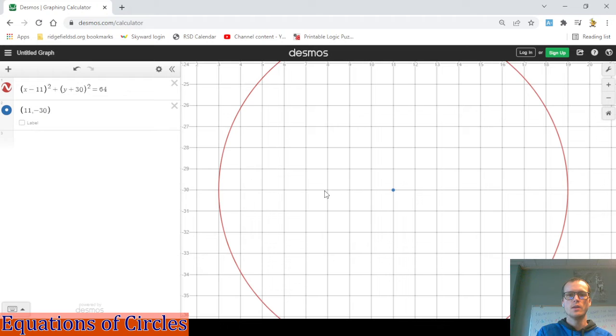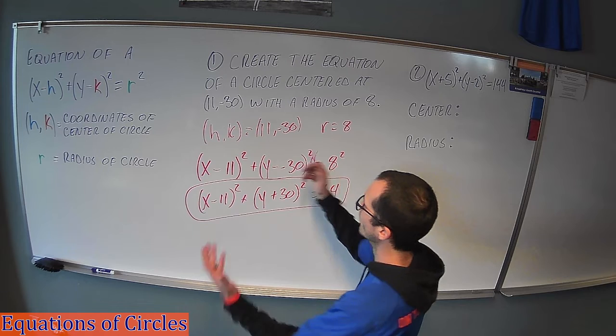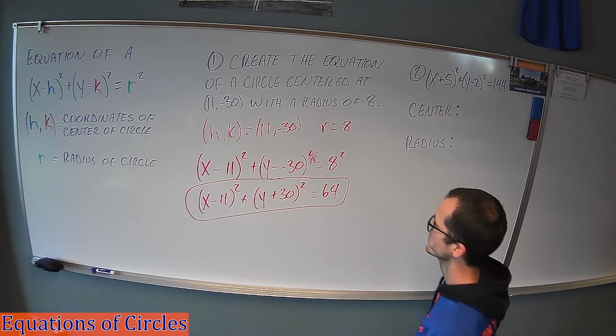So from the center to the side of the circle, we'll just count one, two, three, four, five, six, seven, eight. Cool. So now we have a circle centered at (11, -30), and it has a radius of 8, just like we had hoped. Cool. So we did it. This equation works. It describes the situation that we're seeking.